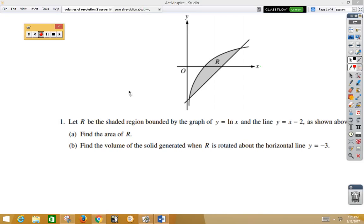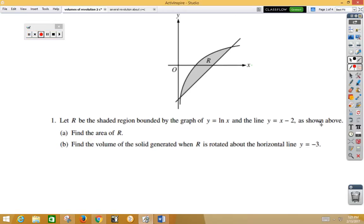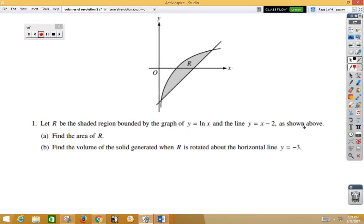In this video, we're going to take part of an FRQ and look at revolving about the line y equals negative 3 with two curves. Let's skip to part B. We have these two curves, y equals the natural log of x and the line y equals x minus 2. We'd like to find the volume of the solid generated when R is rotated about the horizontal line y equals negative 3.